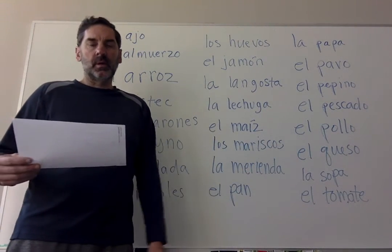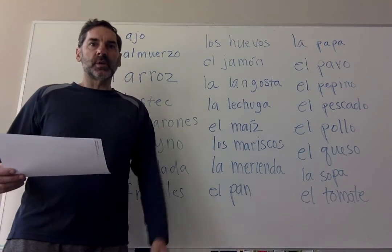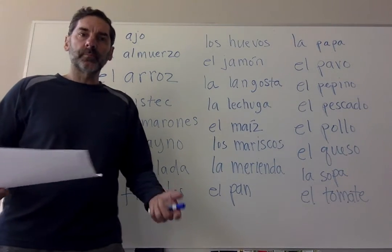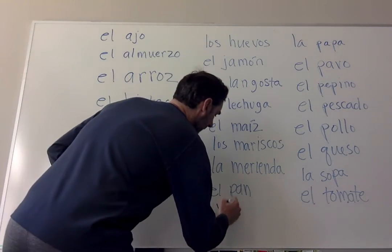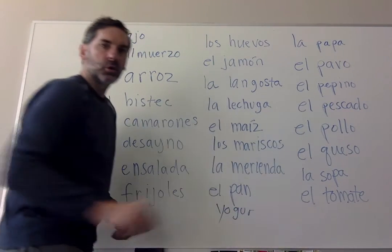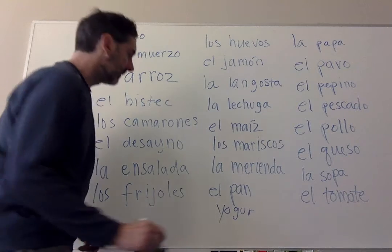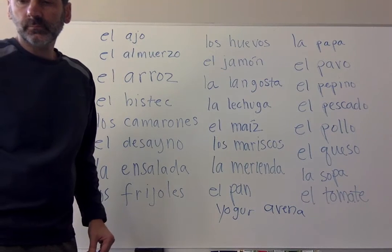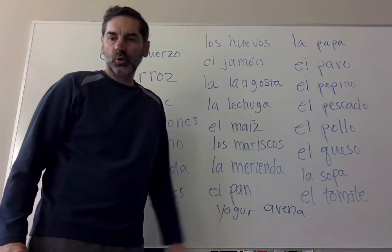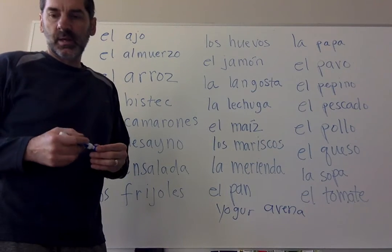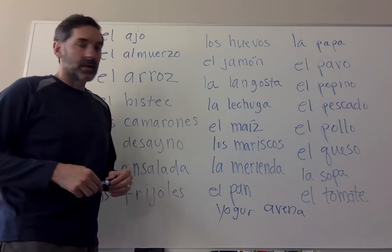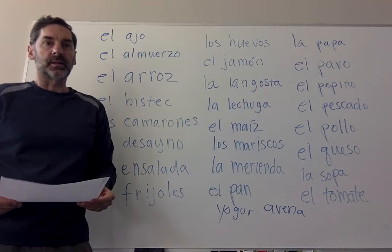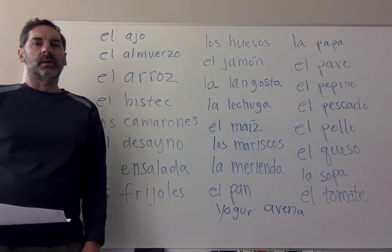Let's look at some of the words I used in my example: café, you know that; fruta, you know that; yogurt — that's a new one; avena means oatmeal; sopa is on our list; sándwich is easy; ensalada sounds just like the word salad. Estos son algunas comidas típicas que nosotros y los hispanohablantes comen todos los días.